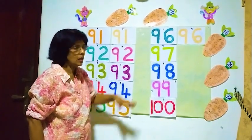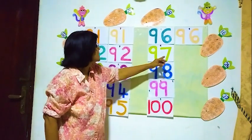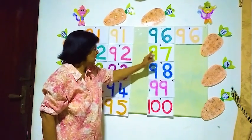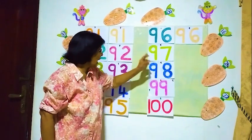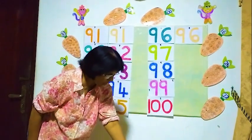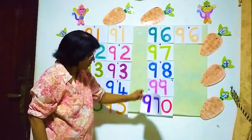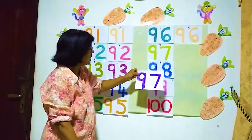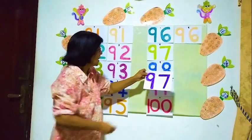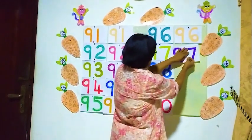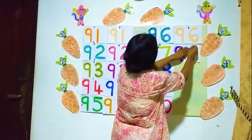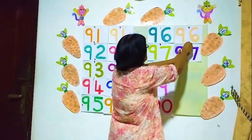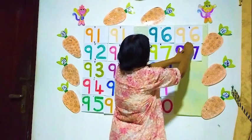The next number: 9 and 7, 9 and 7, 9 and 7 — 97. Here number 97, 97, 97. Alright? 97 is here. Okay.